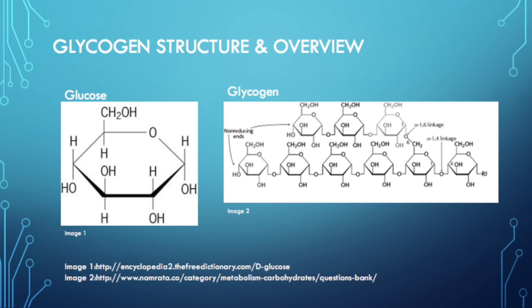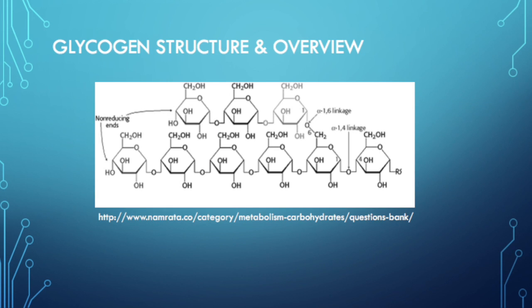Notice the similarities in the structure of glucose and glycogen. Glycogen is composed of multiple glucose molecules connected by alpha-1,6 and alpha-1,4 glycosidic linkages. Glycogen is the storage form of glucose and is able to provide an additional source of glucose outside of gluconeogenesis. The structure of glycogen consists of reducing and non-reducing ends that will be acted upon by enzymes, and also contains alpha-1,4 and alpha-1,6 linkages.